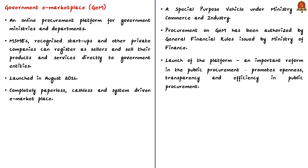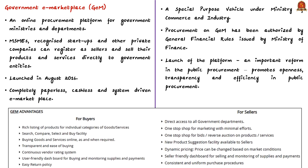The launch of the GeM platform is an important reform in public procurement, bringing openness, transparency, and efficiency. Since public procurement utilizes a substantial portion of taxpayers' money, governments are expected to follow strict procedures to ensure procurement is fair, efficient, transparent, and minimizes wastage of public resources. For example, if a government department requires two laptops, it posts a bid on the GeM website and the bid winner sells the products. Various advantages offered by GeM to sellers and buyers are provided for reference.